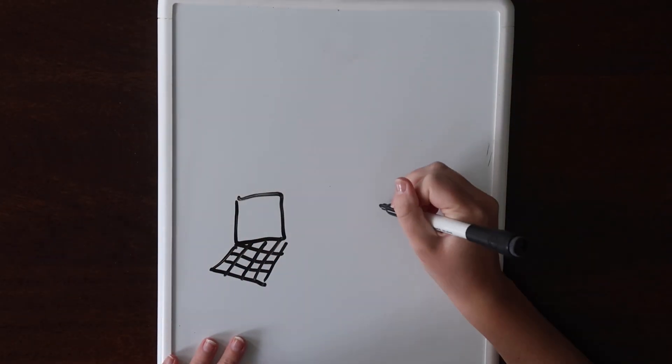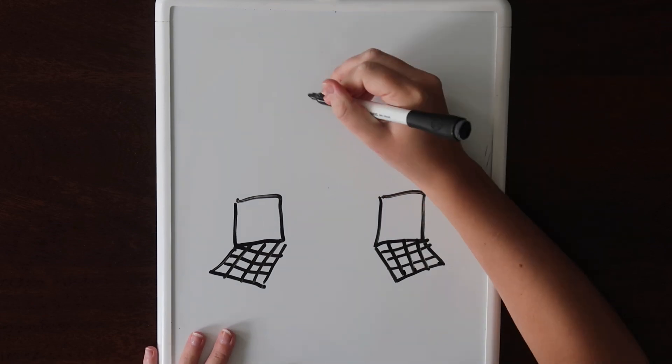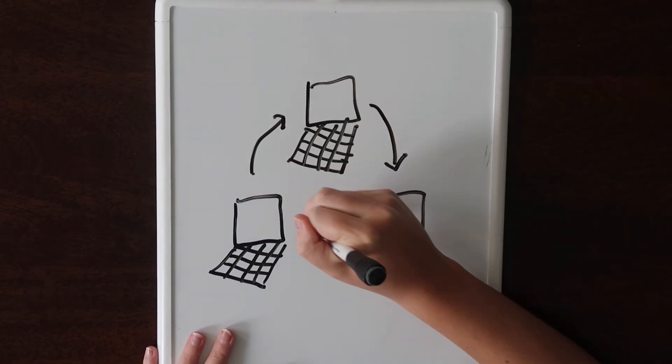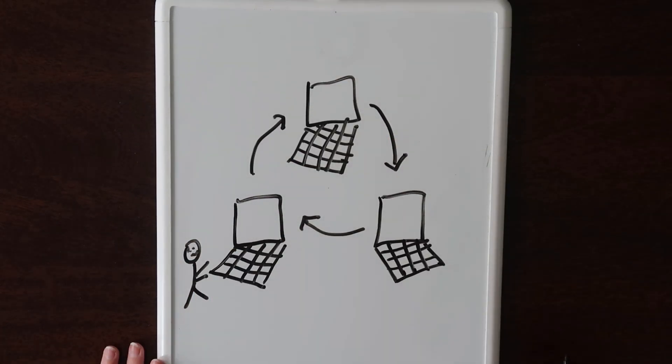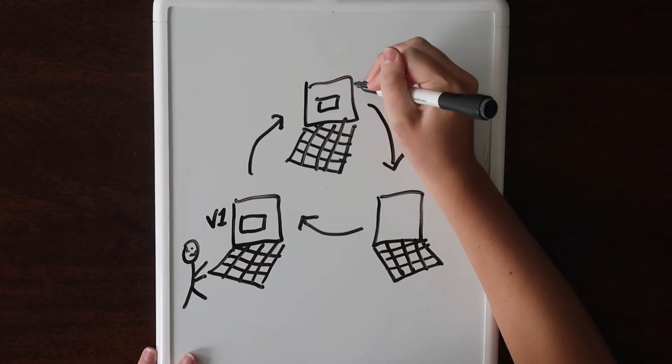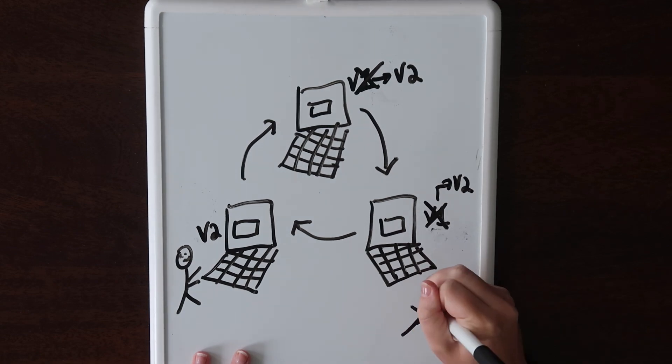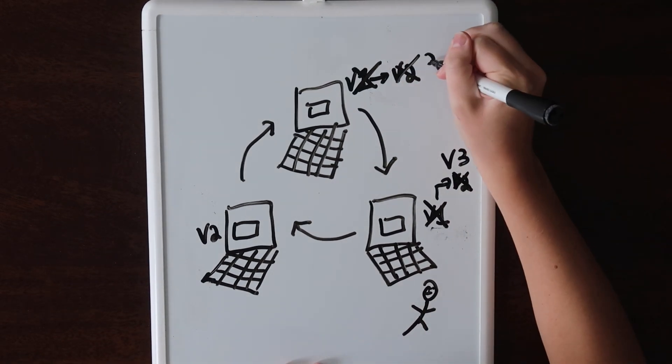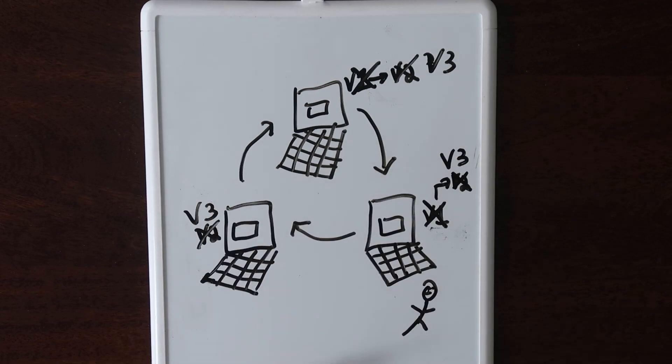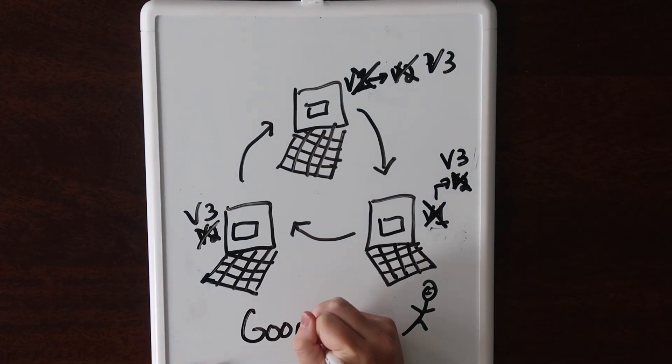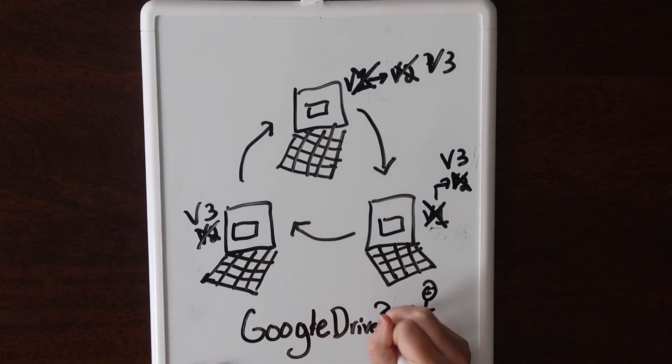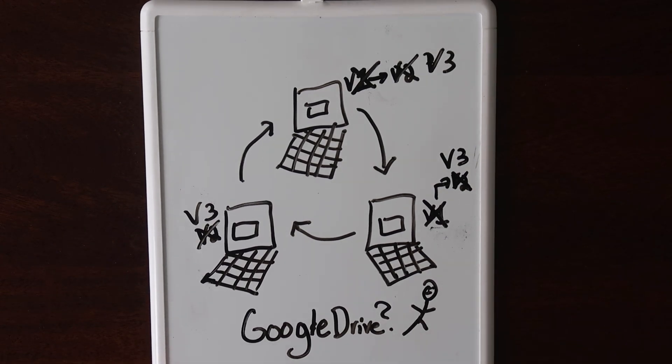Now instead of Google Drive having this best current saved version, what if every computer you worked on had the most recent copy of the best version? Every time a change was made or committed, it would be updated on every single machine in the network. Each computer would keep a ledger of each change and validate it. If this is the case, would you even need a Google Drive?